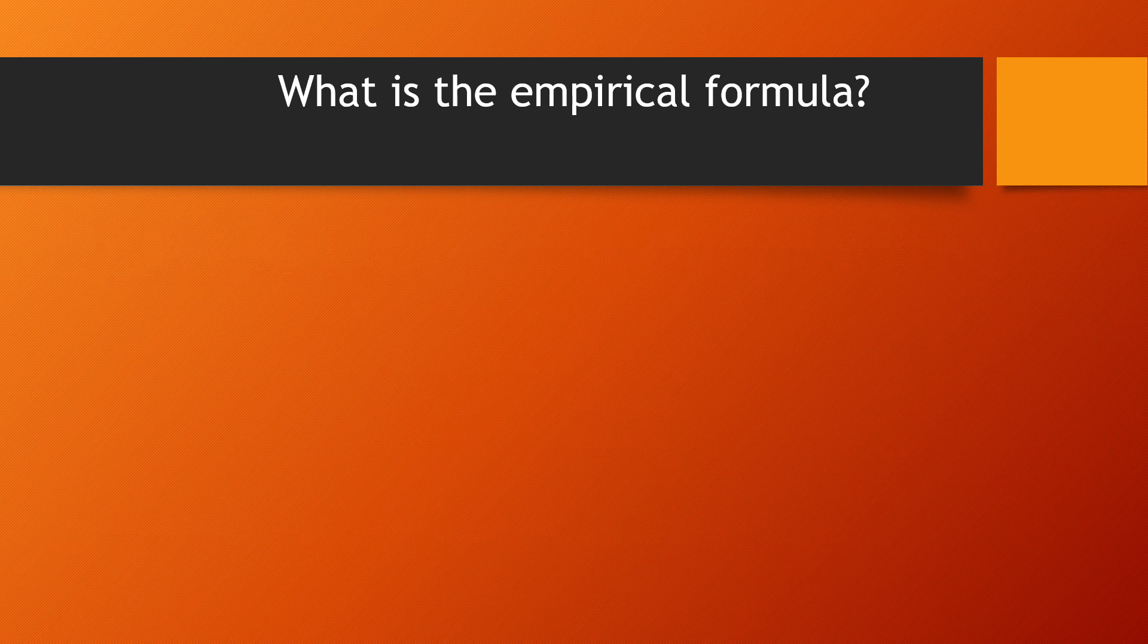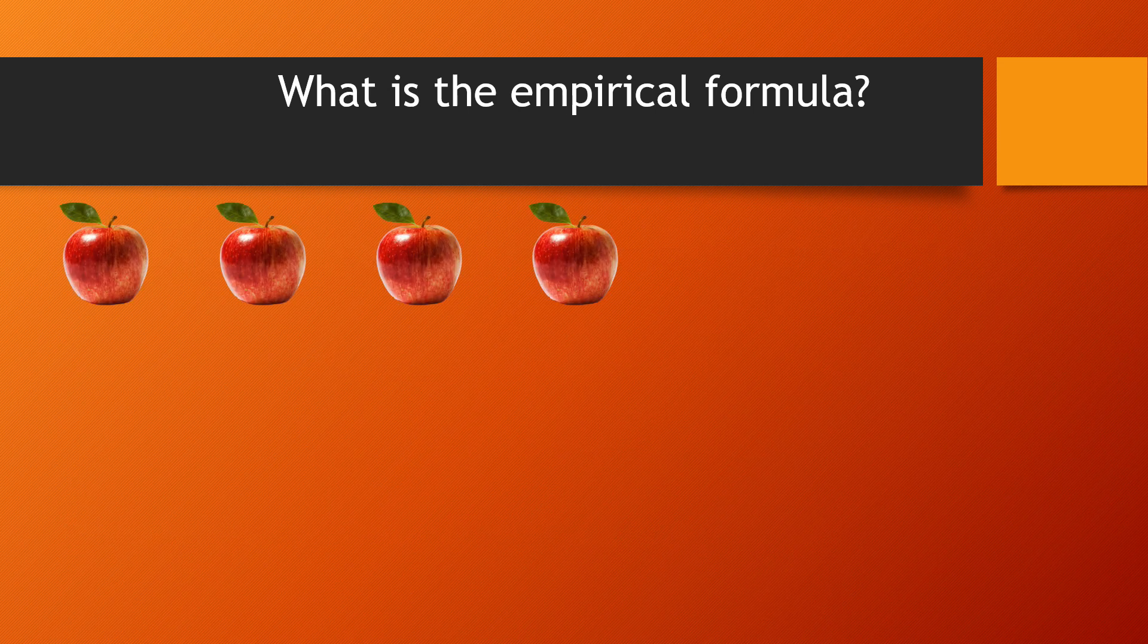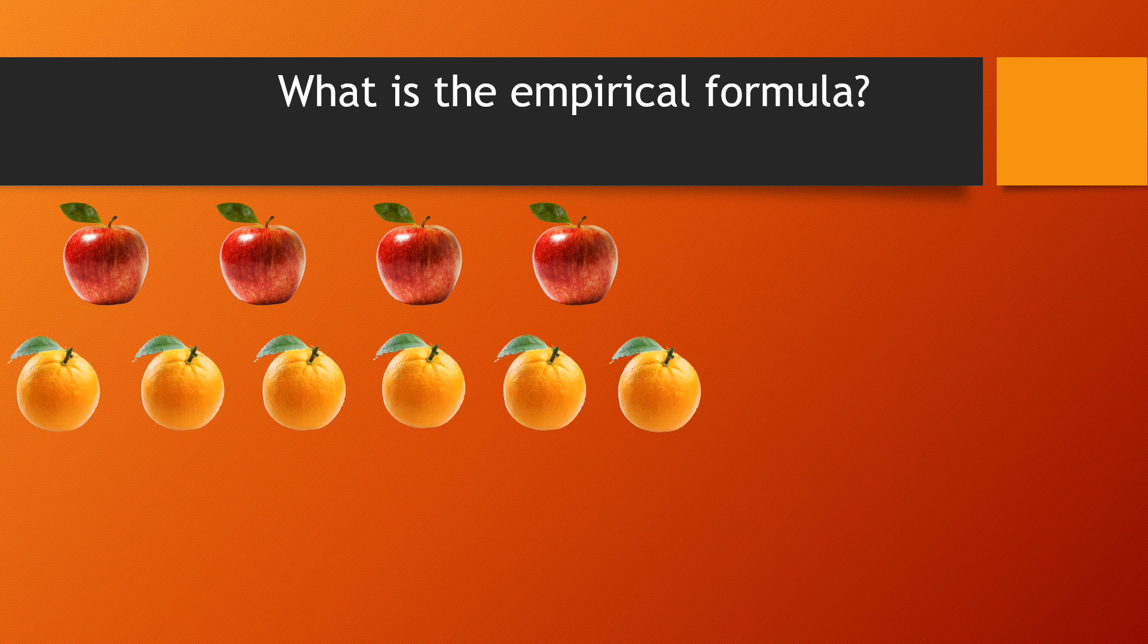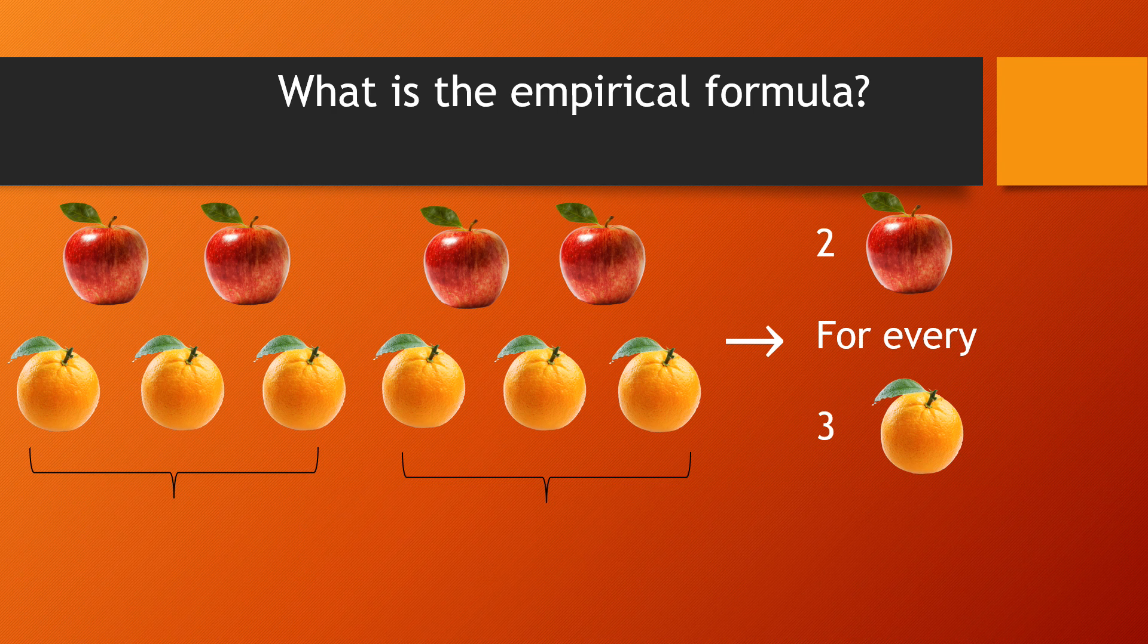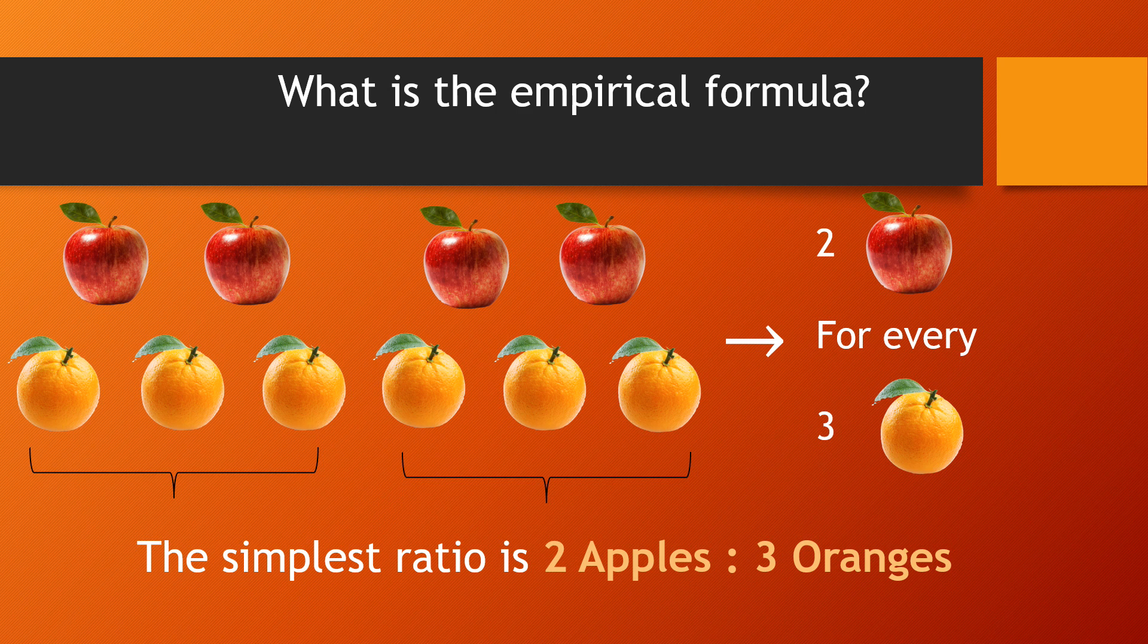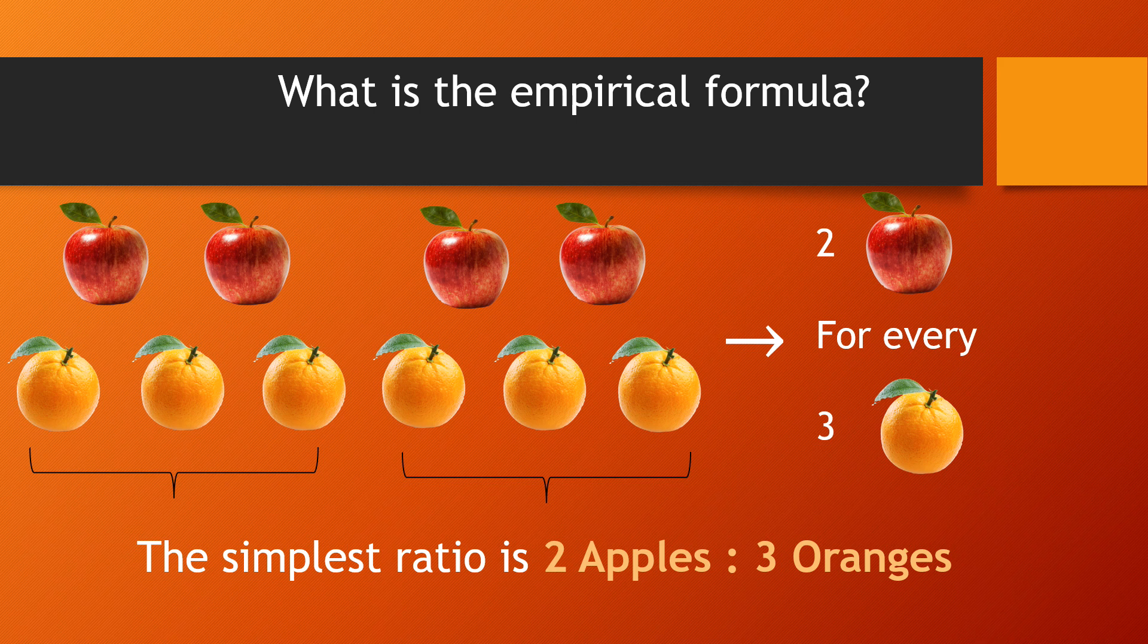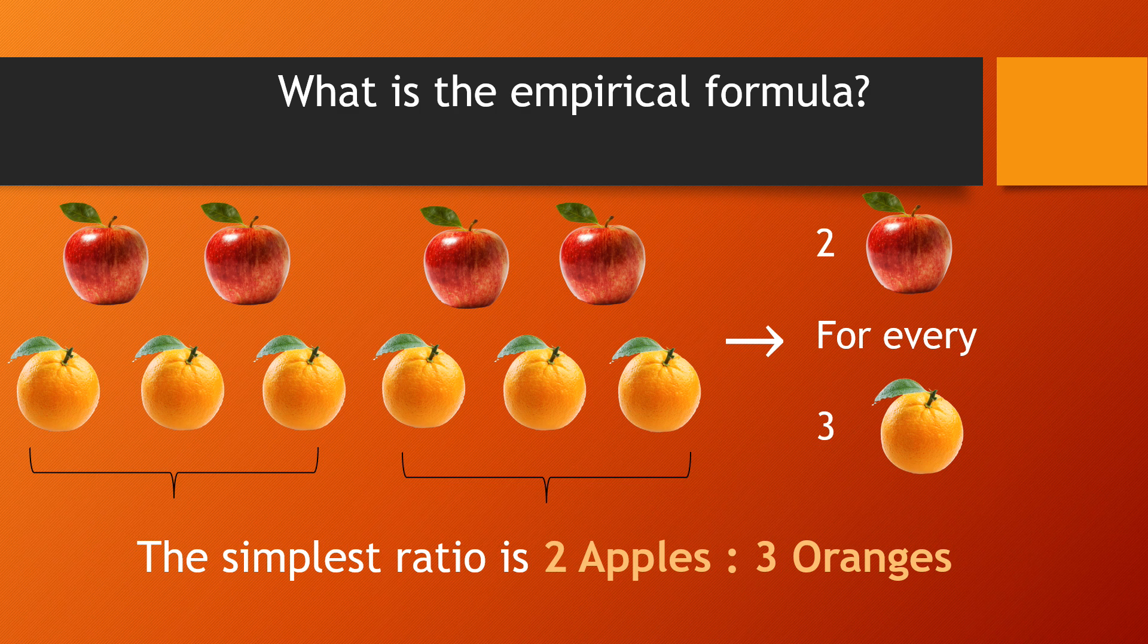Now imagine we have 4 apples and 6 oranges. What's the simplest way we can sort this? Well, as we can see here, for every 2 apples, there are 3 oranges. Since we cannot sort this into any smaller whole numbers, the ratio between apples and oranges in its simplest form is 2 apples to 3 oranges. This can be seen as the empirical formula of apples and oranges.